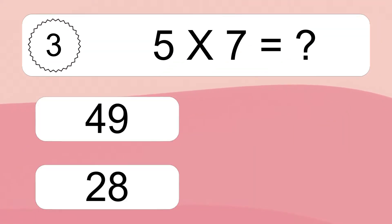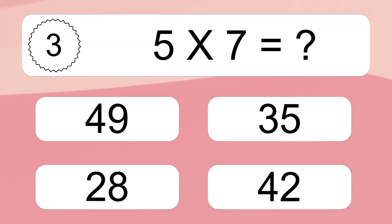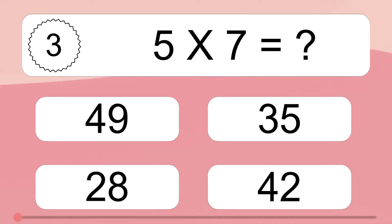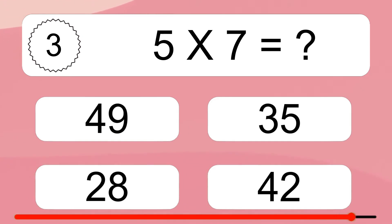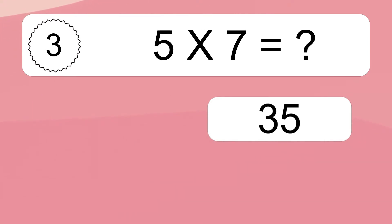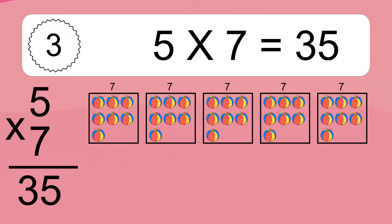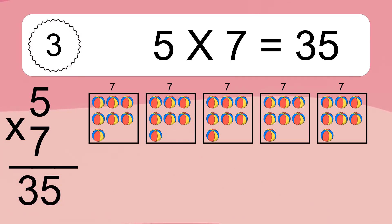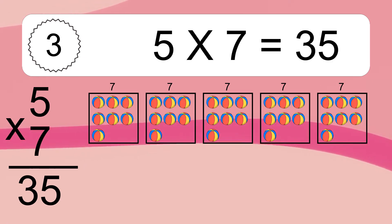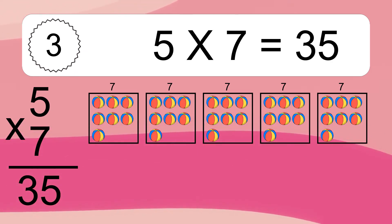Five times seven equals what? Five times seven equals 35. We have five boxes and each box has seven colorful balls inside. If you count all the balls in all the boxes together, you will have five times seven balls. This equals 35 balls.